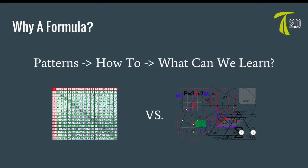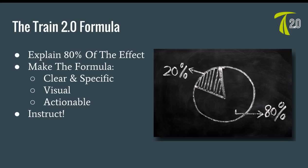What we're going to talk about here is a formula — a pattern on how to do things to see what we can learn. I see skills as sort of like the multiplication tables; the building blocks you need to learn in order to put them together in a formula. This is something that Daryl Belfry calls skill blends. With the Train 2.0 formula, we're aiming to explain 80% of an effect, and my goal is to make them clear and specific, visual and actionable so you can take action right away.